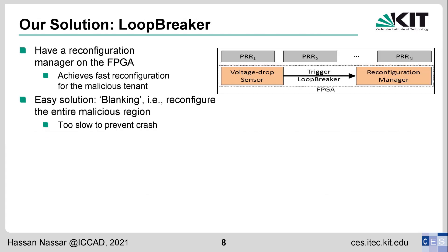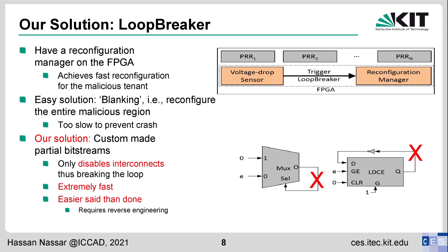This brings us to our solution: Loop Breaker. The FPGA is divided into a static region and a dynamic region. The dynamic region is partitioned into several partitions where tenants' designs reside. In the static region, we have TDC voltage-drop sensors and a reconfiguration manager. Upon detecting an attack, the TDC triggers the reconfiguration manager to perform a fast reconfiguration of the partition containing the malicious tenant. Our solution tailors a custom partial bitstream that only disables the interconnects, breaking the loop used by the attack. It must be extremely fast.